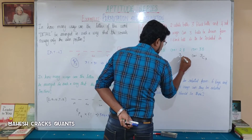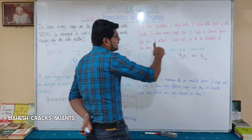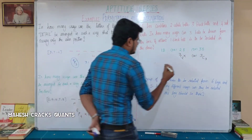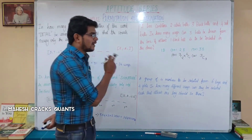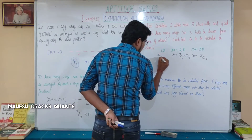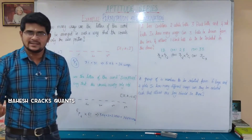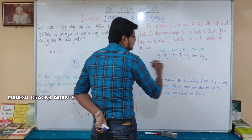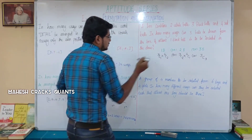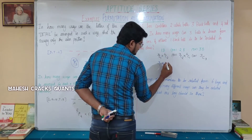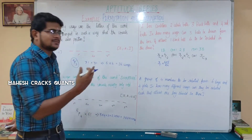If taking two black balls from three, that's 3C2, and the remaining one ball comes from the six non-black balls (two white and four red), which is 6C1. If taking one black ball from three, that's 3C1, and the remaining two balls come from the six non-black balls, which is 6C2. The total is the sum of all three cases.